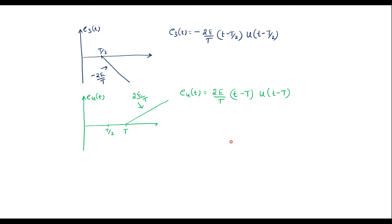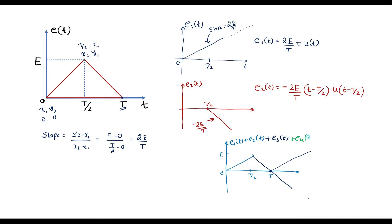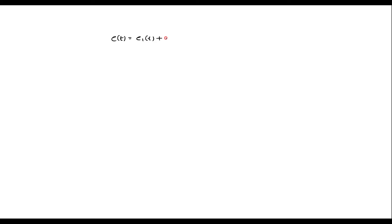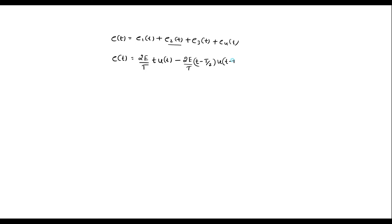Adding all four signals: when we add E4(t), the signals cancel each other and the resultant matches the original triangular waveform. Therefore, E(t) = E1(t) + E2(t) + E3(t) + E4(t), which equals (2E/T) · t · u(t) minus (2E/T) · 2 · (t - T/2) · u(t - T/2) plus (2E/T) · (t - T) · u(t - T).